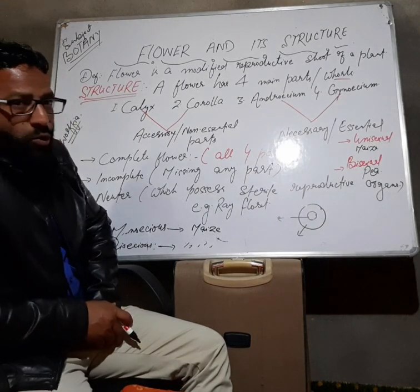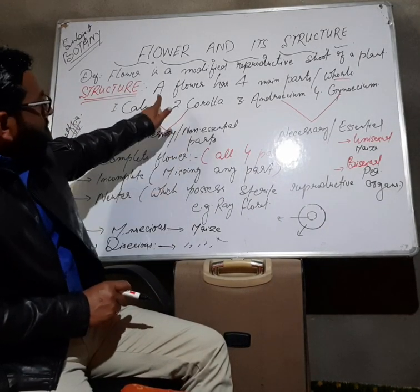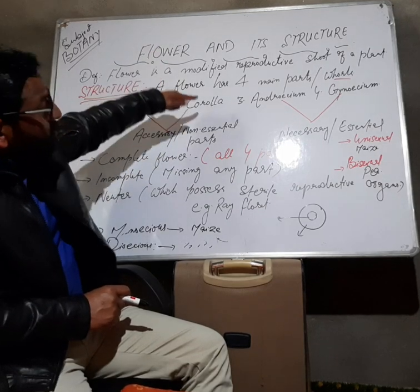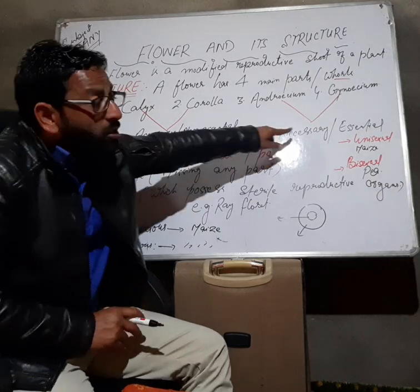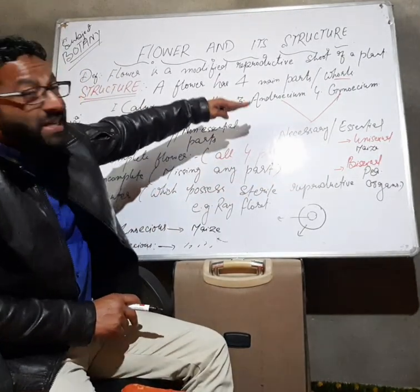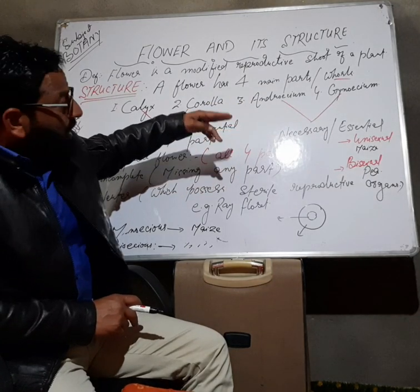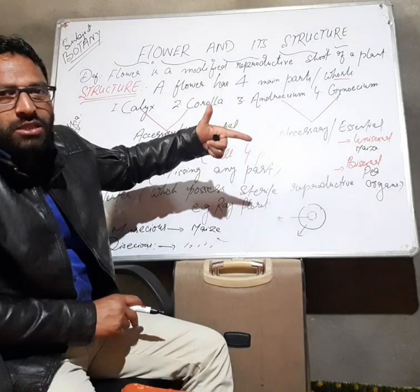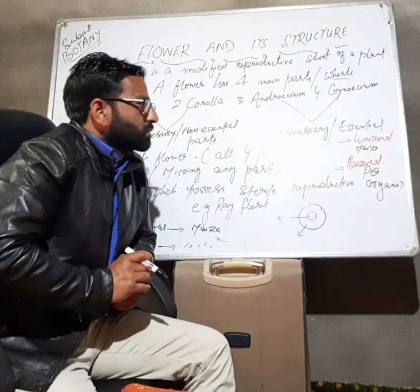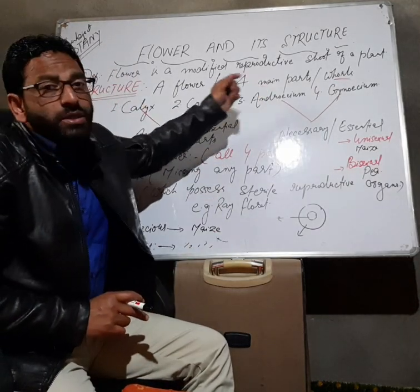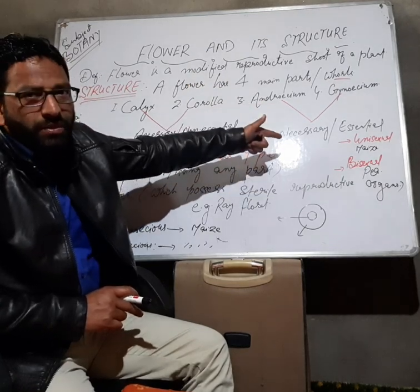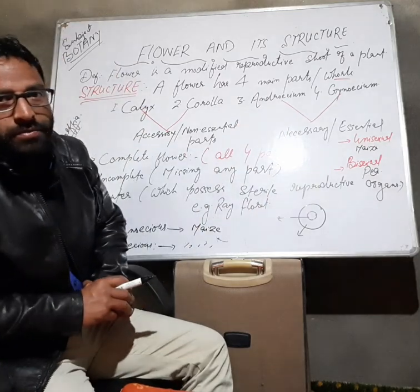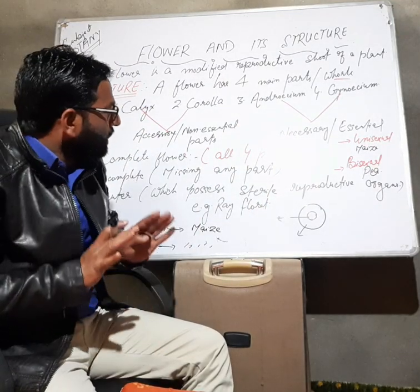If a flower possesses both sexual organs — that is stamens and carpels — that flower is called a bisexual flower. Examples are potato, tomato, and pea — these are bisexual flowers. If a flower is lacking any of the sexual organs, meaning it possesses only male or only female organs, then the flower is called a unisexual flower.